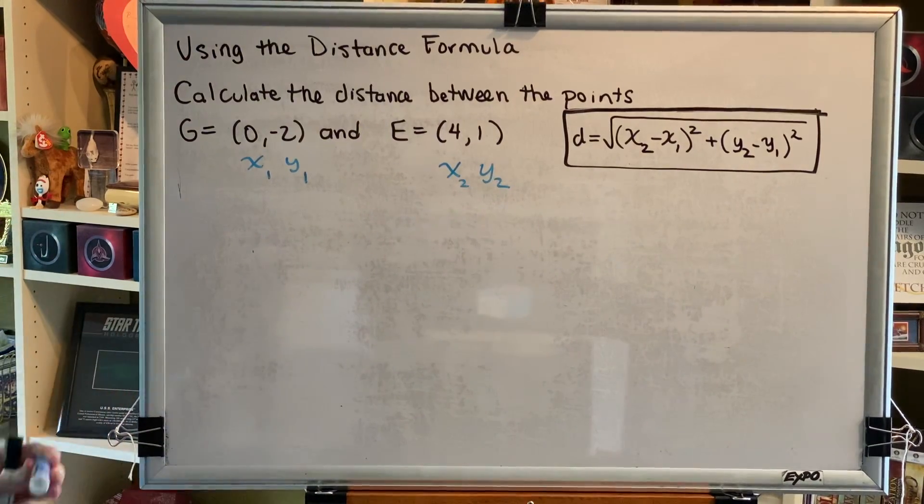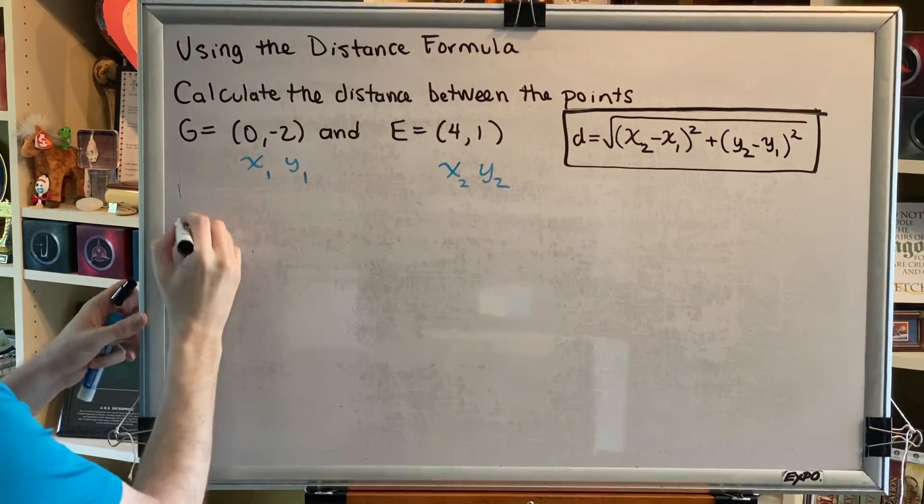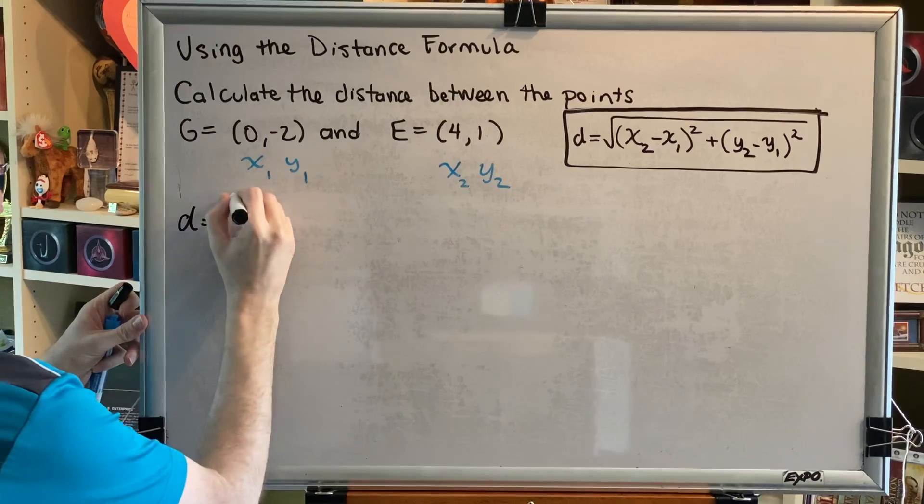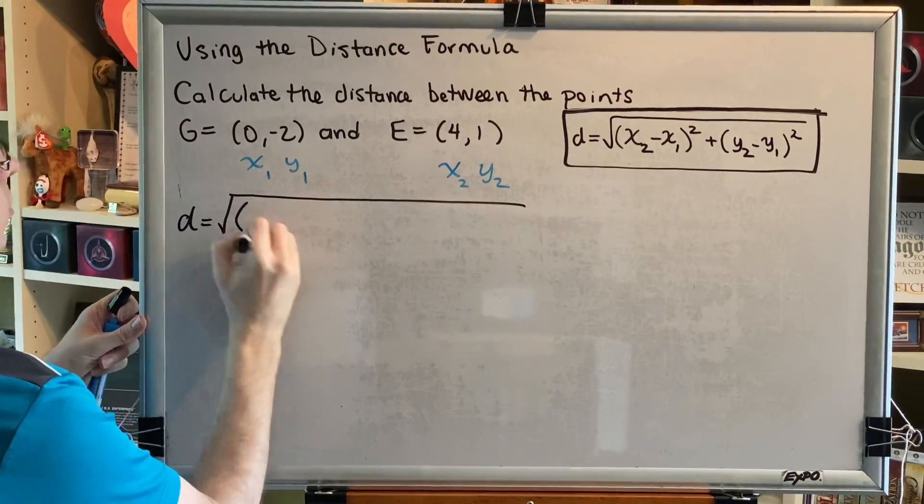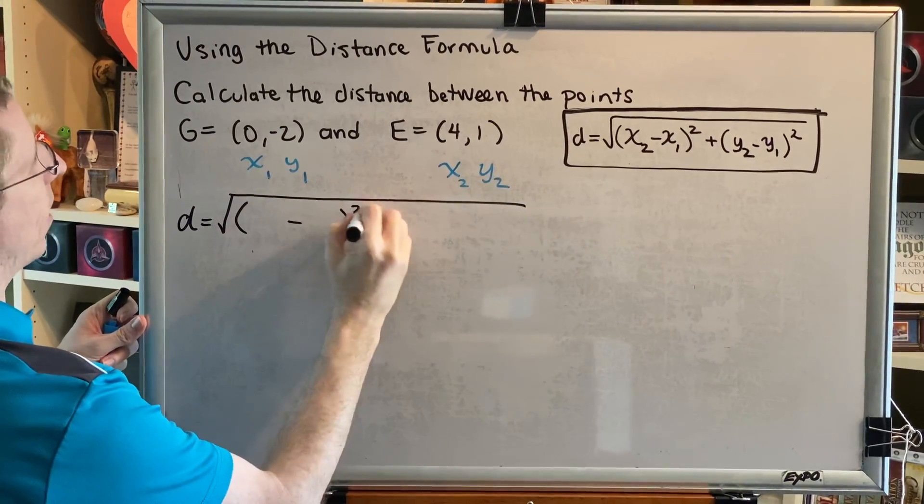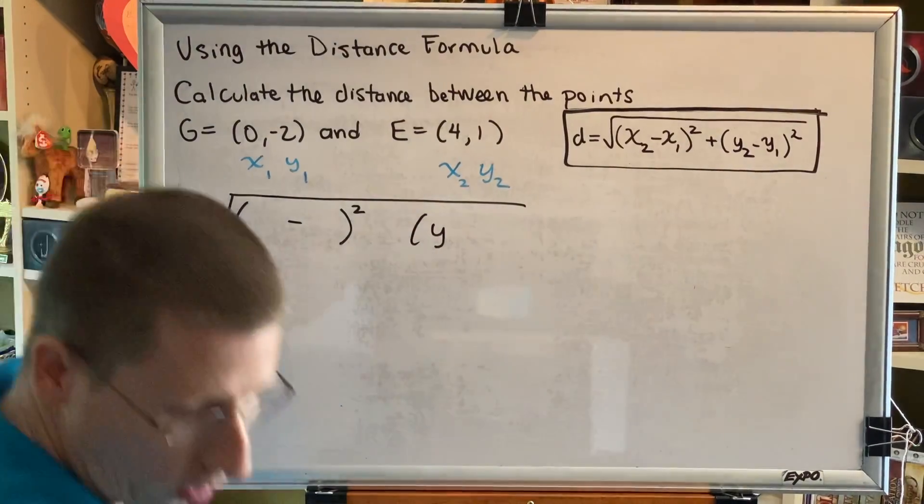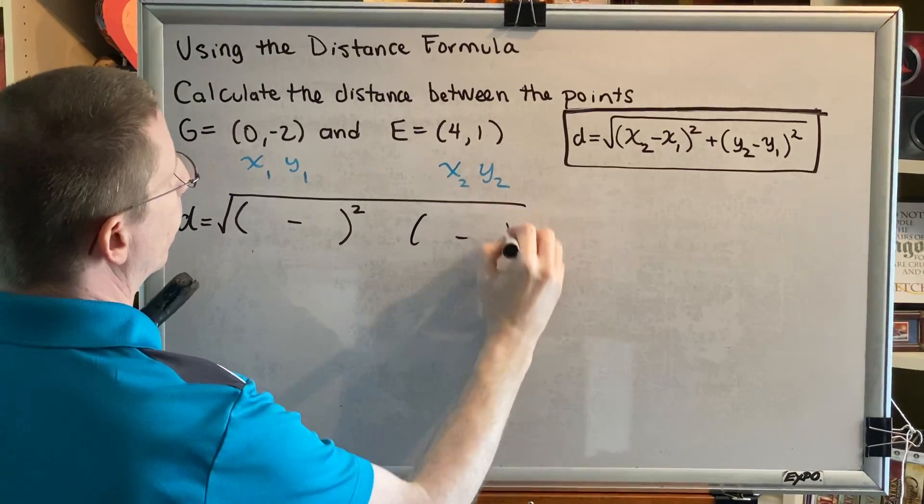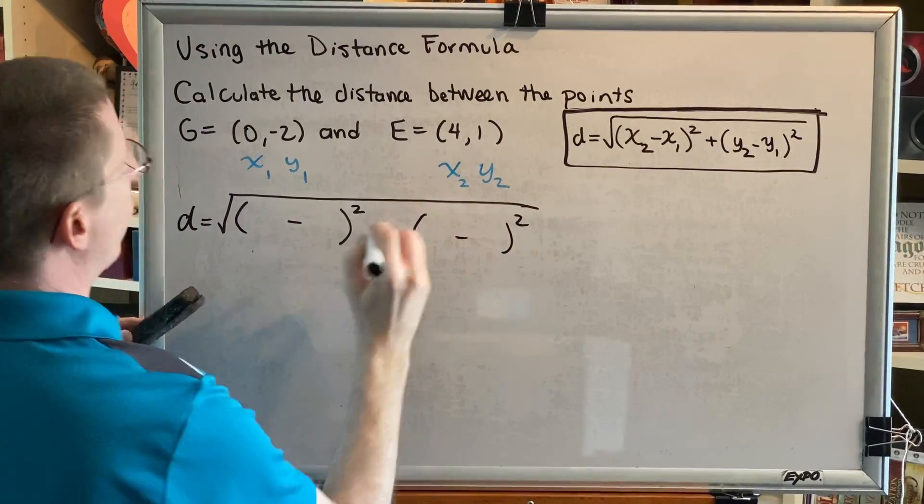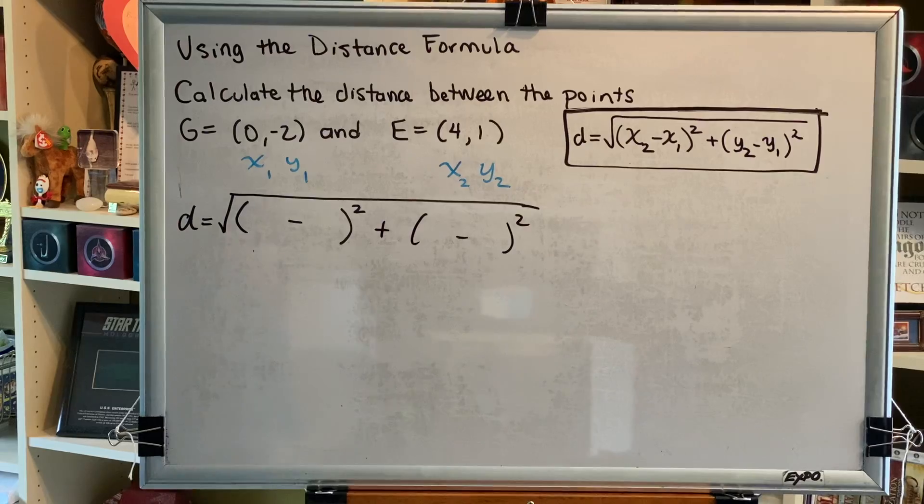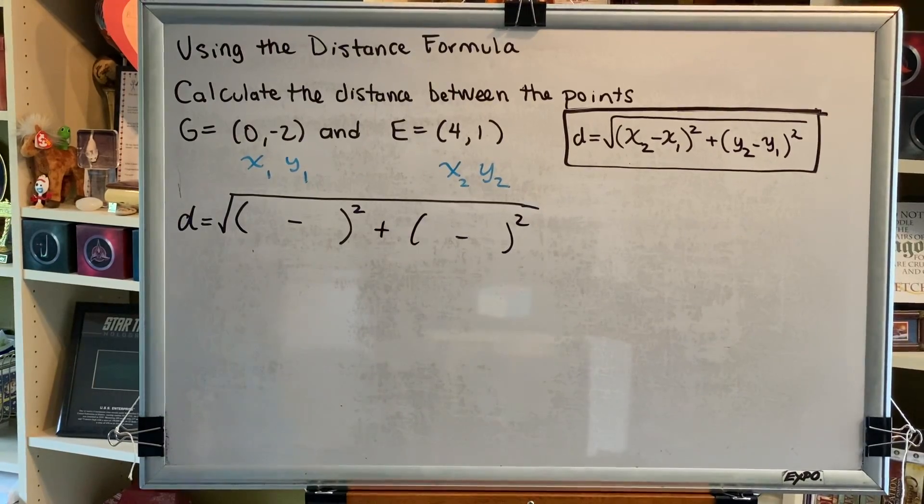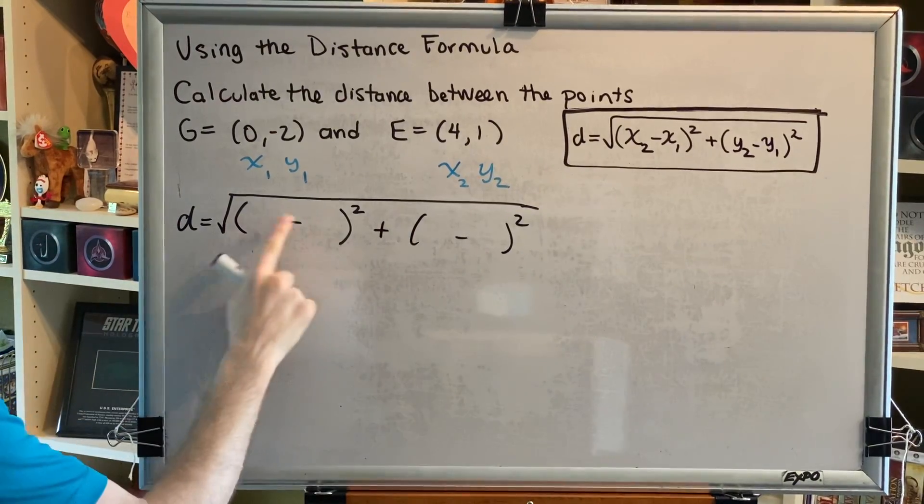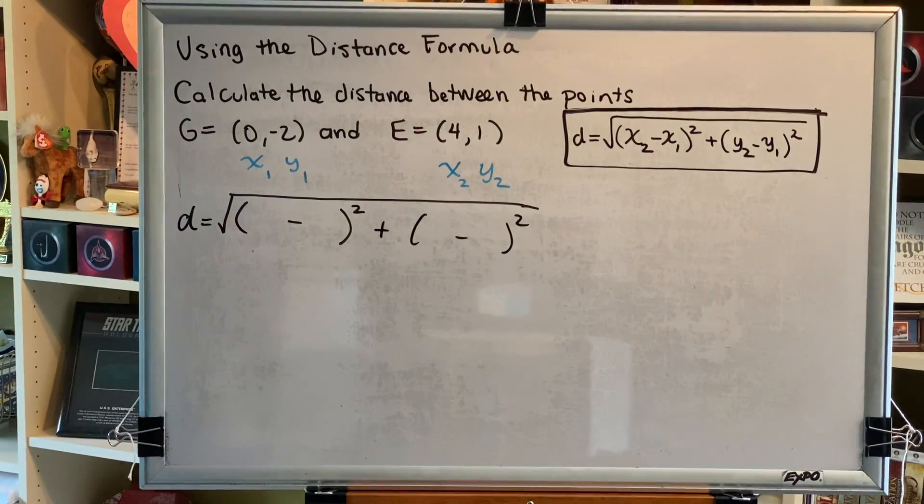Now we plug into our distance formula. Distance formula: d equals the square root of... We have to subtract the x coordinates and square them, subtract the y coordinates and square them, and then add those things together. My advice is when using the distance formula, write this part first and then fill in the numbers afterwards. This will help you avoid making mistakes.